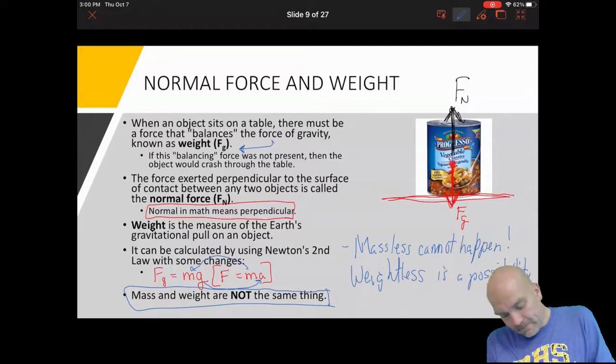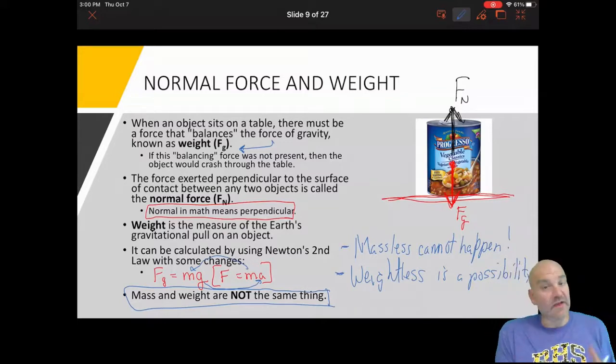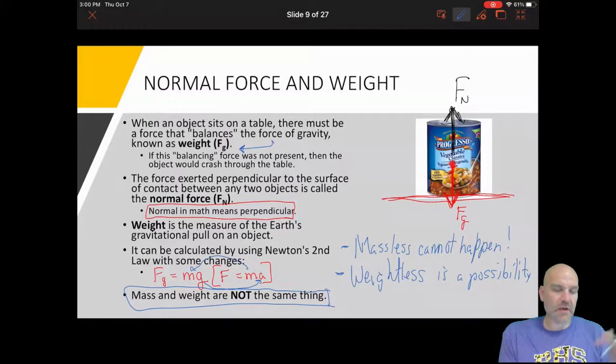But you can never be massless, or massless cannot happen. So they like to do trick questions like that. They may say hey, you go up to this place, this is the amount of gravitational pull you feel, what's your mass? So they try to trick you and you say okay, mass is just whatever the mass of the object is.